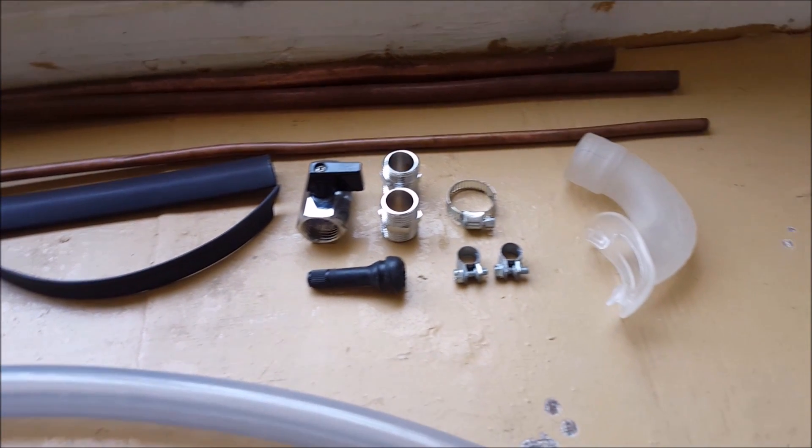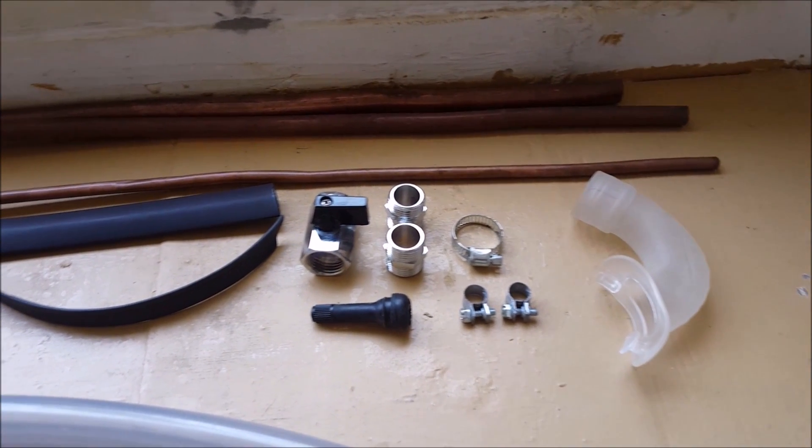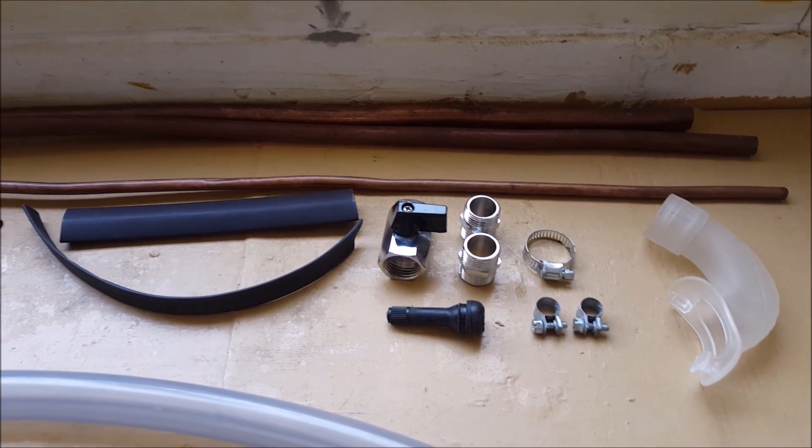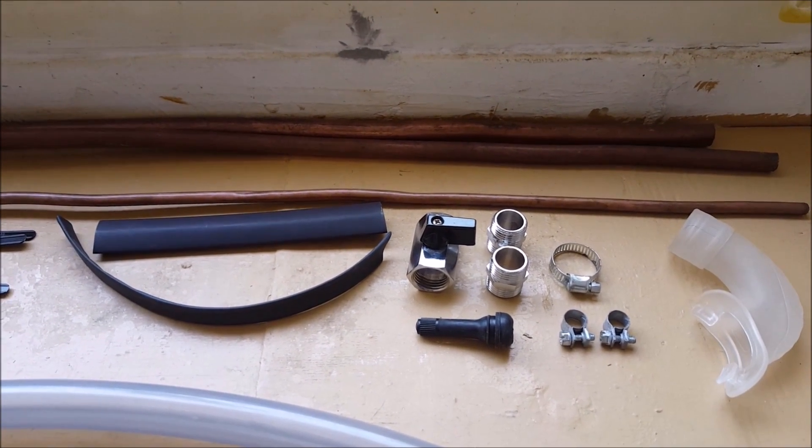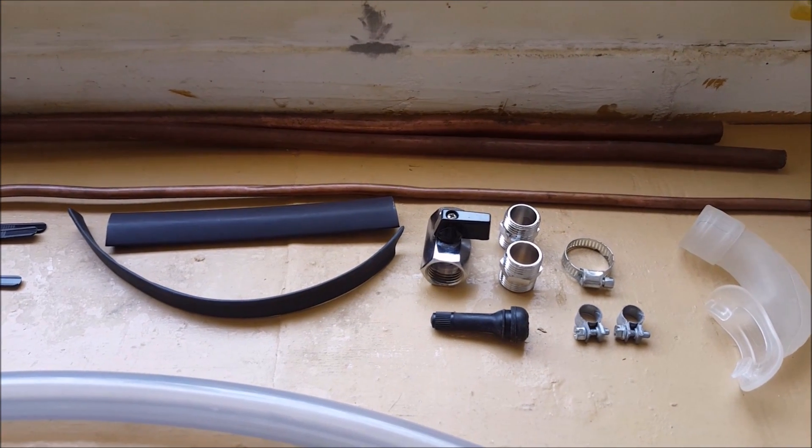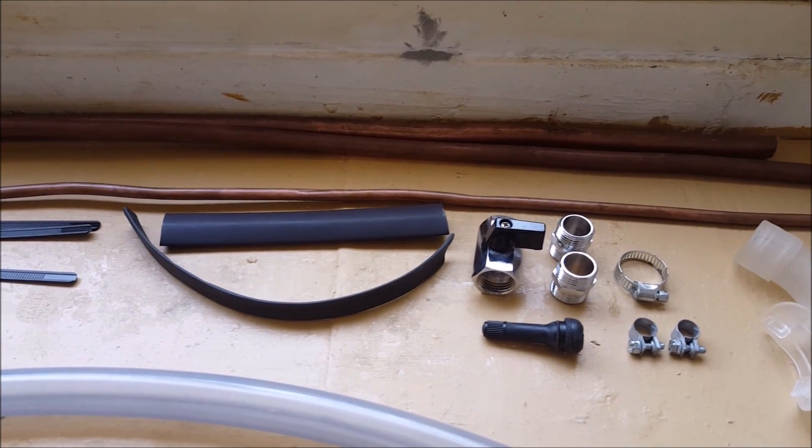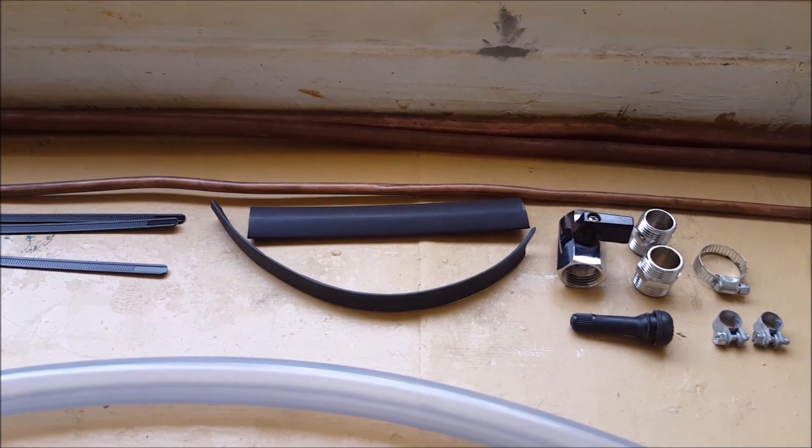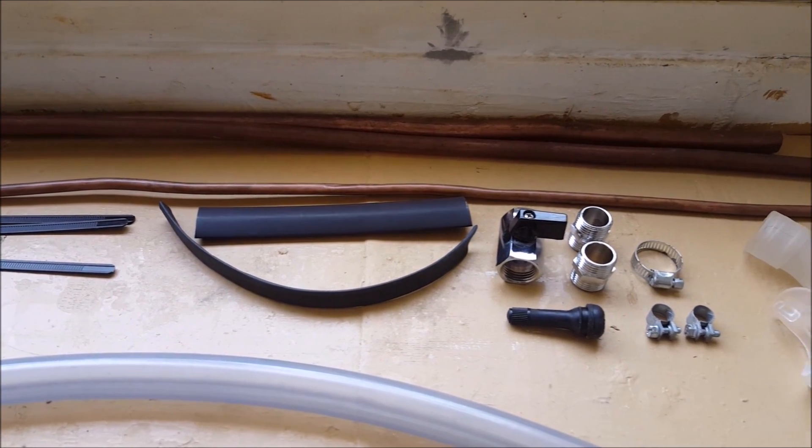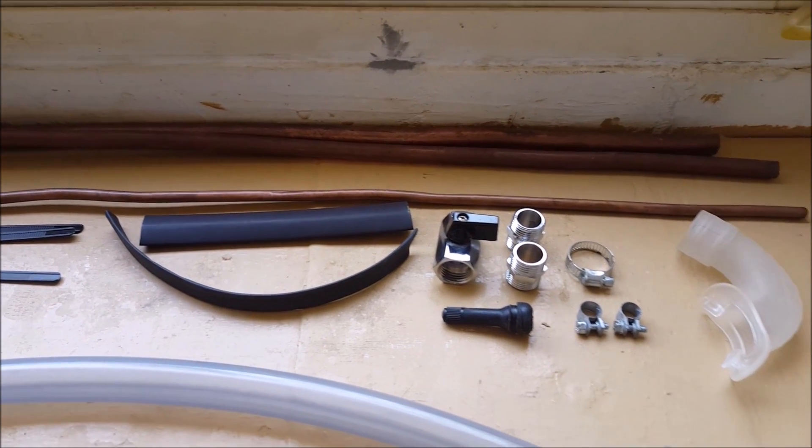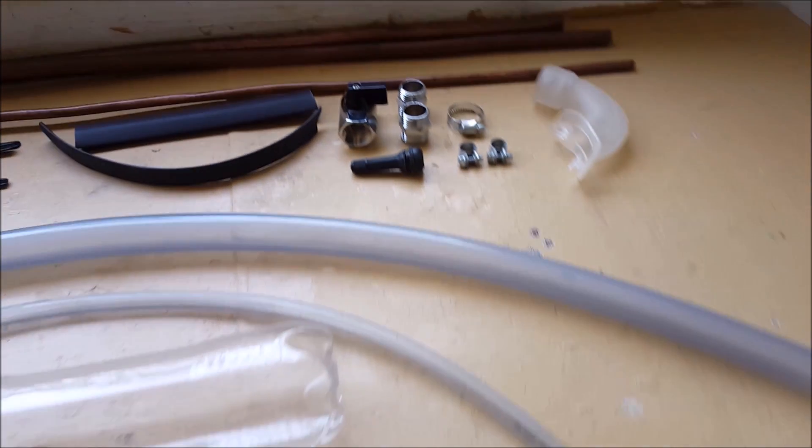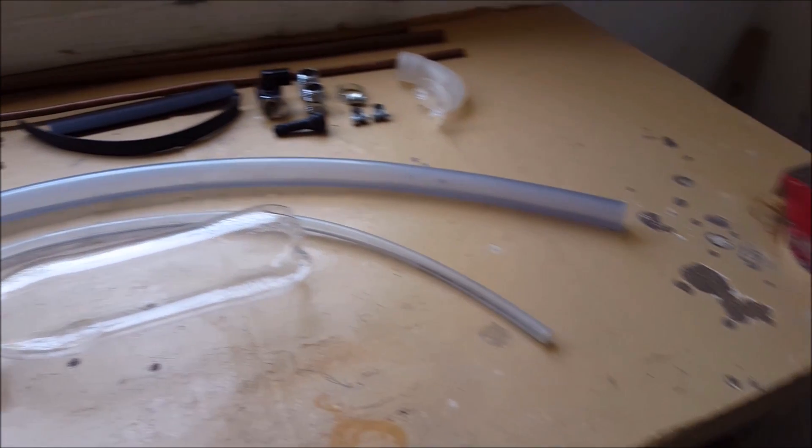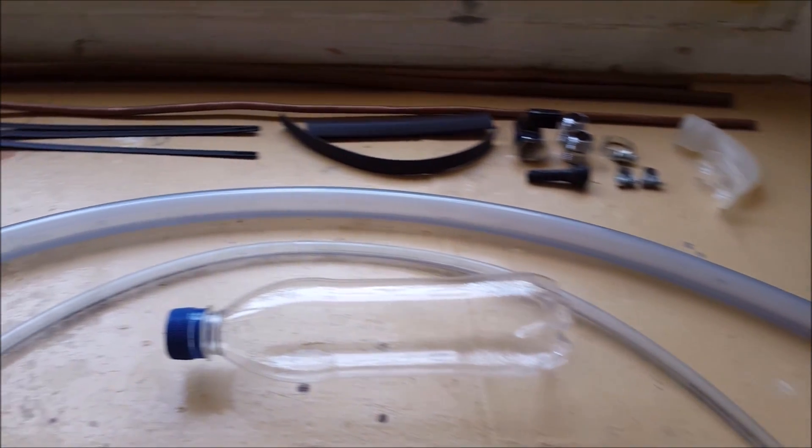One snorkel breathing attachment. This is optional because you could just stick the pipe directly in your mouth. One replacement new car tire valve. Around 1 ml of non-toxic oil. One small plastic bottle. Make sure that it is hard plastic and not water bottles, as they are very thin and can rupture with the air pressure. Around 75 cm of 20 mm vinyl tubing.